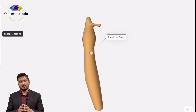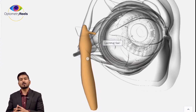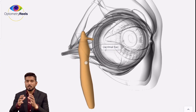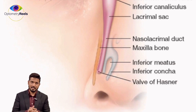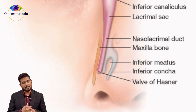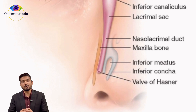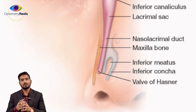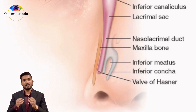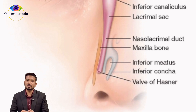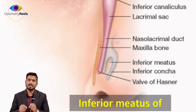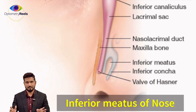From the lacrimal sac, the tears flow down into a tube-like structure known as the nasolacrimal duct. At the nasolacrimal duct there is another valve called the valve of Hasner, and through this valve the tears flow down to the inferior meatus of the nose.